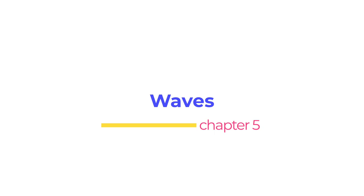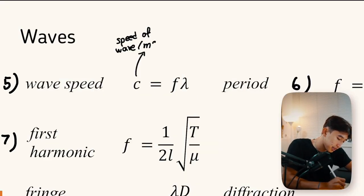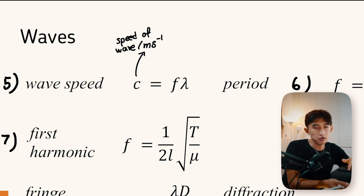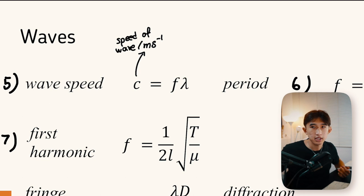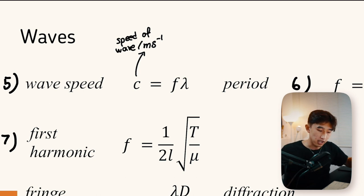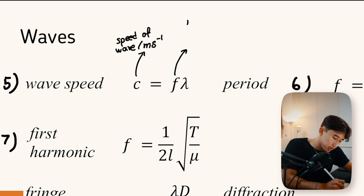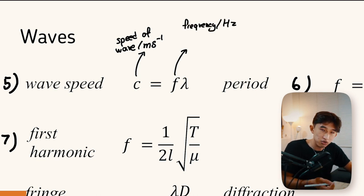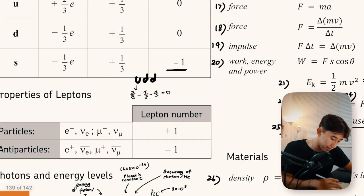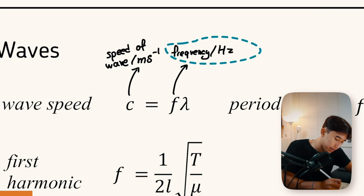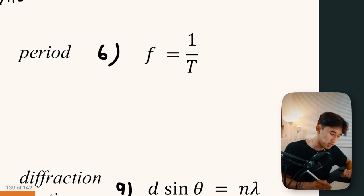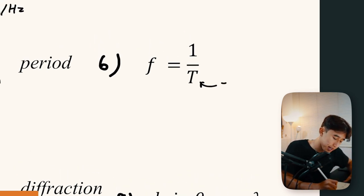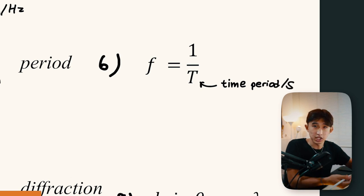Wave speed: c = fλ, where c (or v) is the speed of the wave in m/s — don't confuse it with the speed of light unless dealing with electromagnetic waves. This applies to all waves, not just EM waves. f is frequency in hertz, and λ is wavelength in metres. Frequency is also defined as the reciprocal of the time period T, given in seconds — f = 1/T.